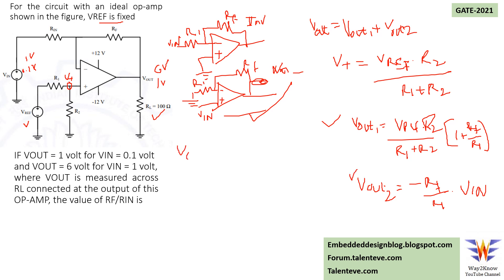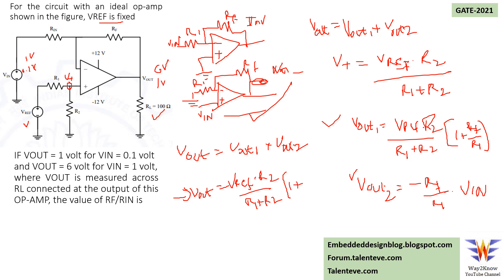The total output of this op-amp is Vout = Vout1 + Vout2. So Vout = Vref · R2/(R1 + R2) · (1 + RF/R1) minus (RF/R1) · Vin. This is the complete output expression combining both the non-inverting and inverting contributions.